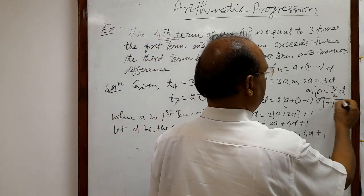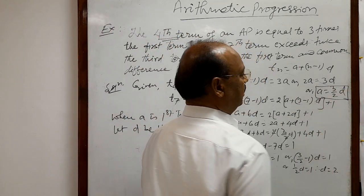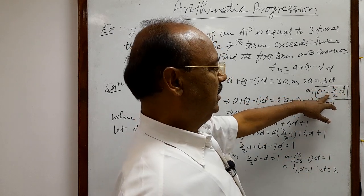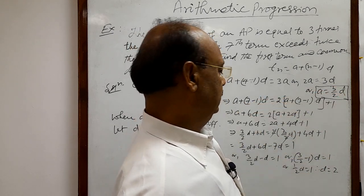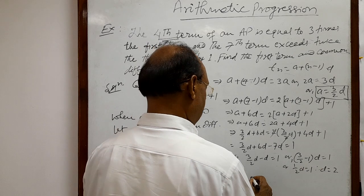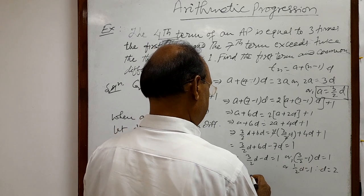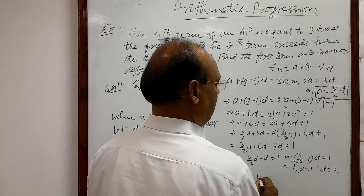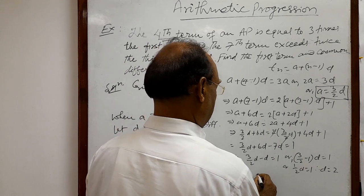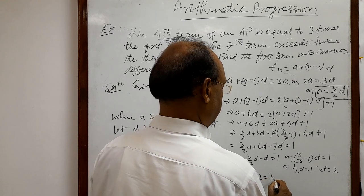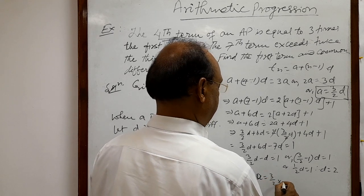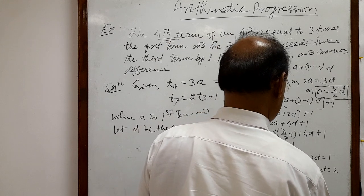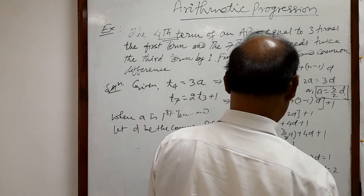So d = 2. By the relation a = 3d/2, putting d = 2, we get a = (3/2) × 2. The 2 cancels out, so a = 3.